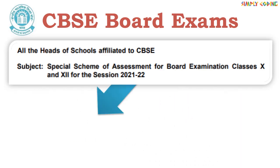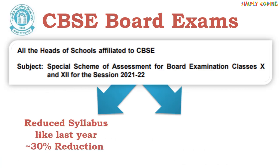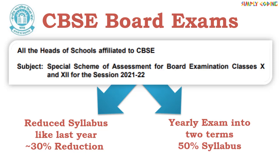CBSE has taken two important decisions. First, they will have a reduced or rationalized syllabus, like they had declared last year, with a similar 30% reduction. Second, they have divided the yearly exam into two terms — term 1 and term 2 — with 50% of the syllabus in each term.